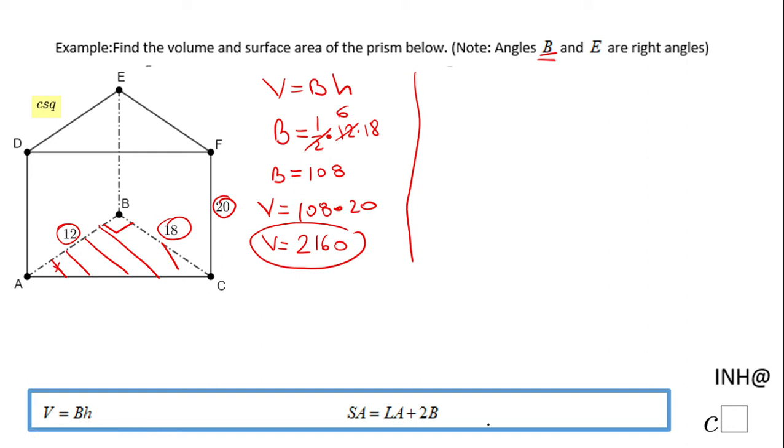This is the volume of this triangular prism. And now, I'm going to move to the second part, where we need to find the surface area. Notice the formula here. The surface area is the lateral area plus 2 bases, and the 2 bases are the bottom and the top of this rectangular prism, and we found that base is 108, so we just multiply by 2 when we need that.